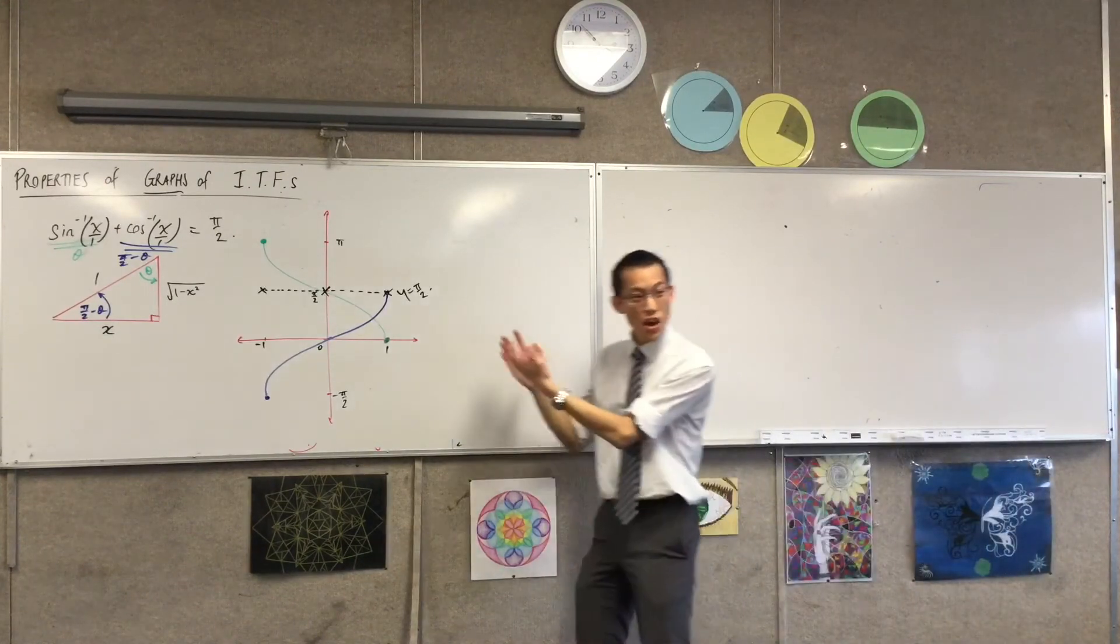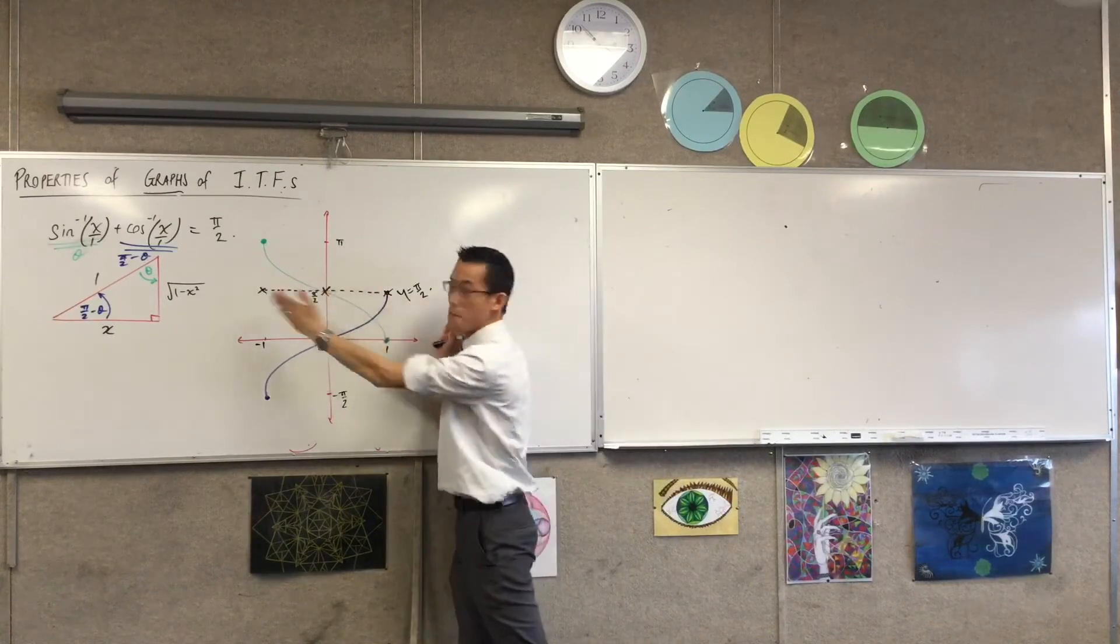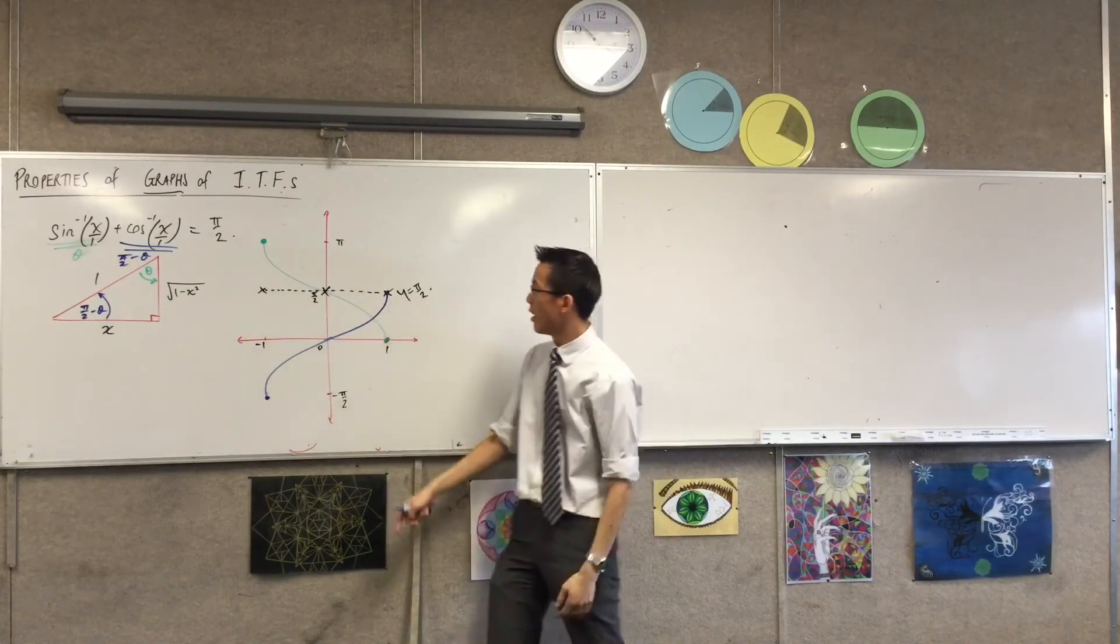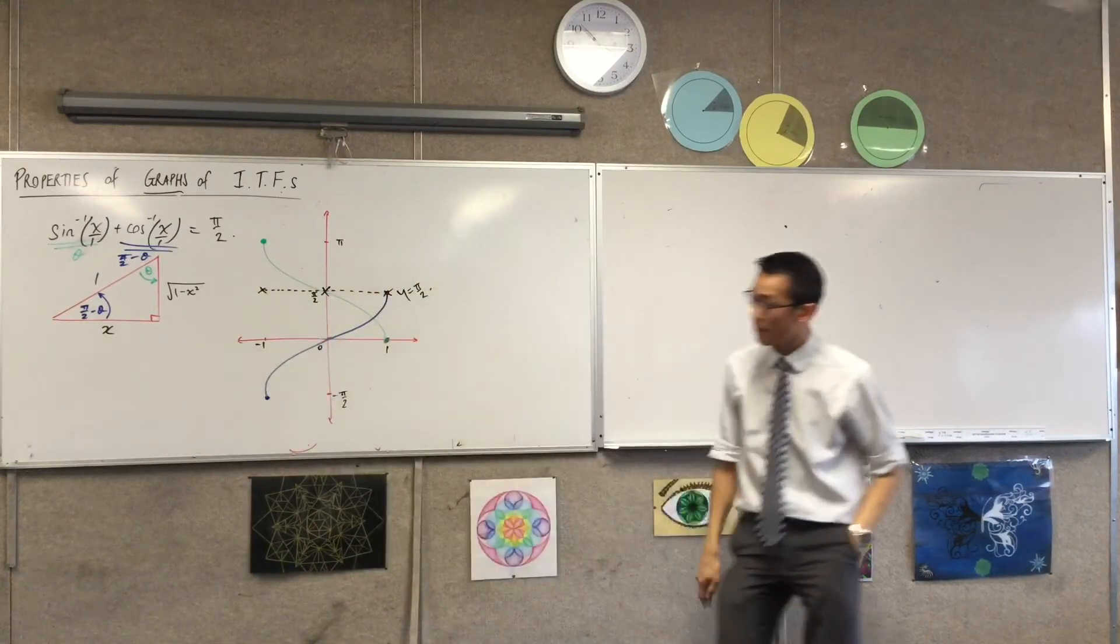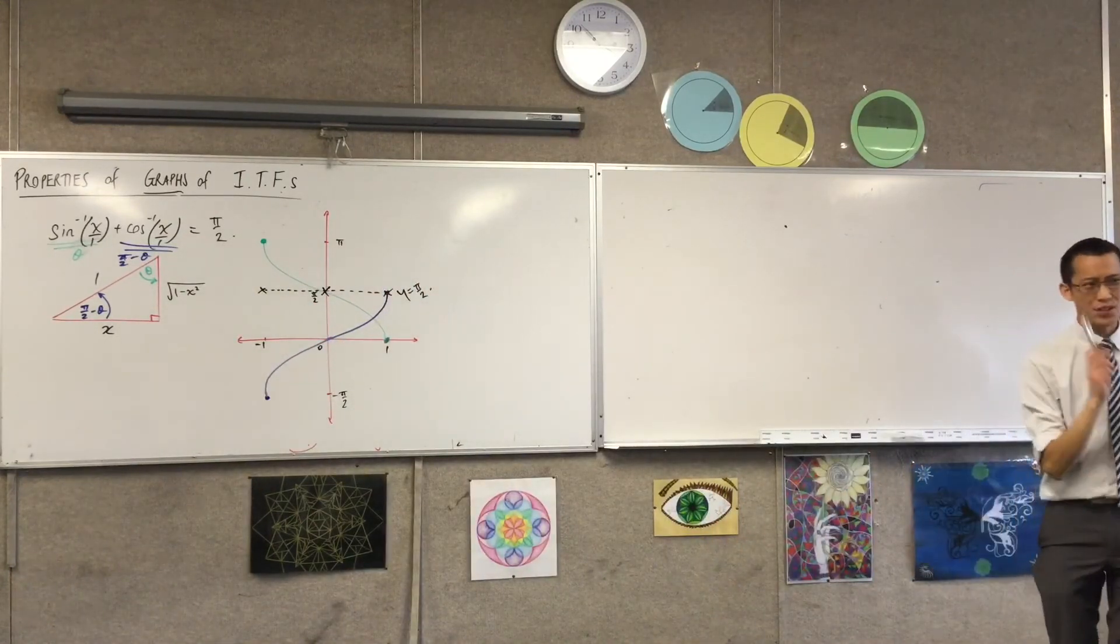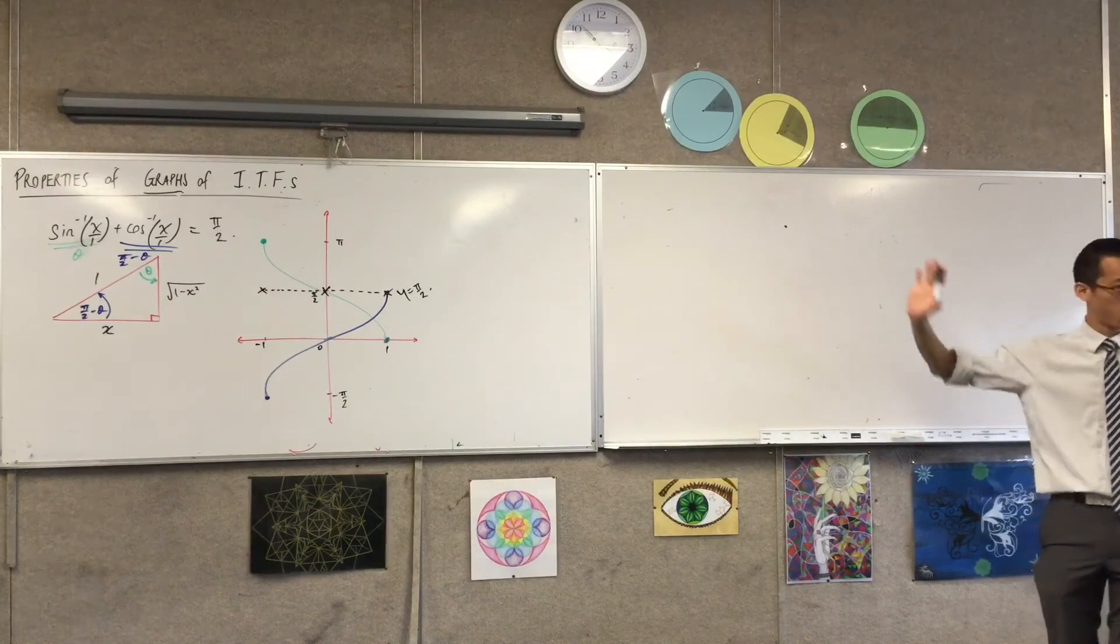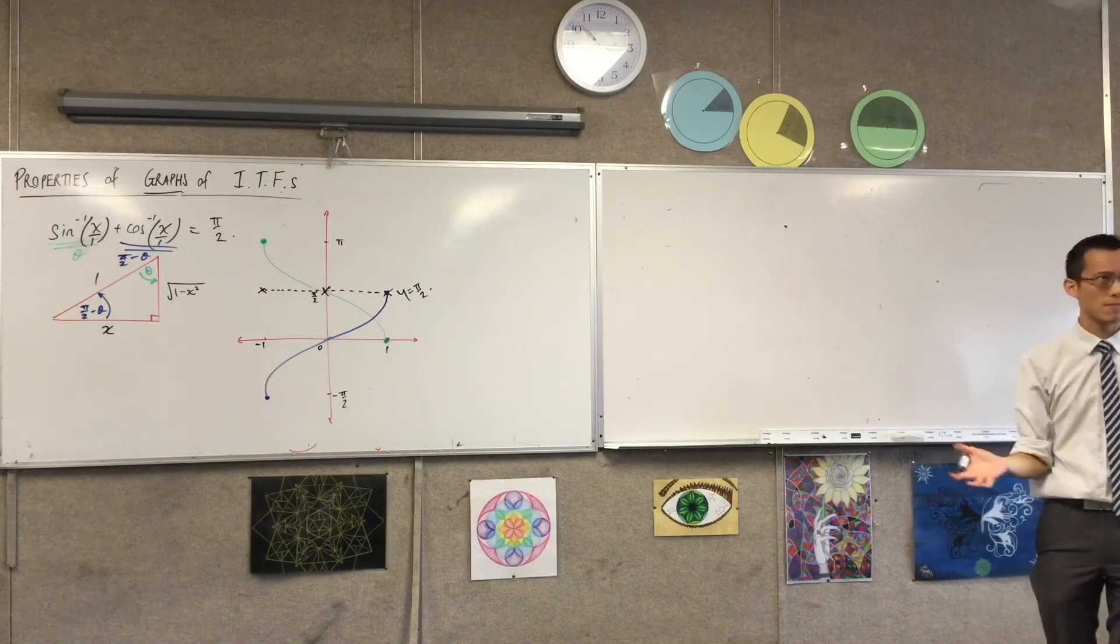Now, this is a nicer argument because it extends the domain. Right? It extends the domain, and you can see, look, this is true for more values than just in my little right angle triangle over there. However, it's not yet complete. To really, really make this rigorous, and we'll finish this tomorrow, where I really need to argue is,